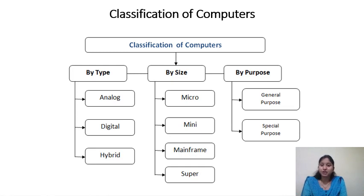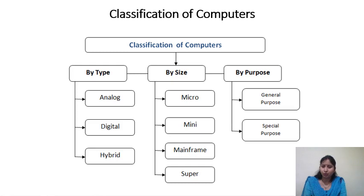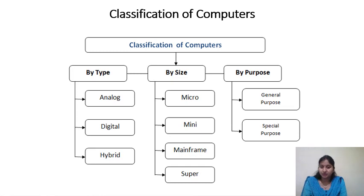General purpose computers can be used by any common user at home or at the office, but special purpose computers are dedicated to a single specific task. We will see the details in the coming slides.